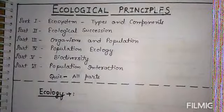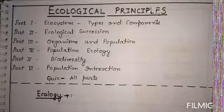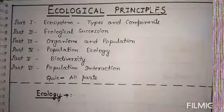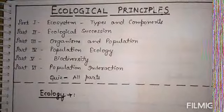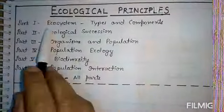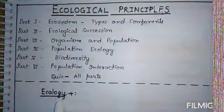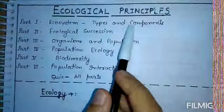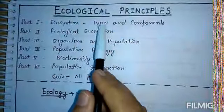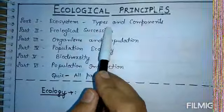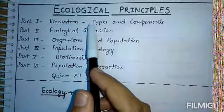Friends, today in Science Made Easy, our major topic is the ecological principle, which is also known as ecology. As it is a wider discipline of biology and because of its lengthy nature, we have divided this particular ecological principle topic under several subtopics, namely the ecosystem, its types and components. Here we will discuss about the ecosystem and the various types of ecosystem present in nature and the components of which the ecosystem is made up of.